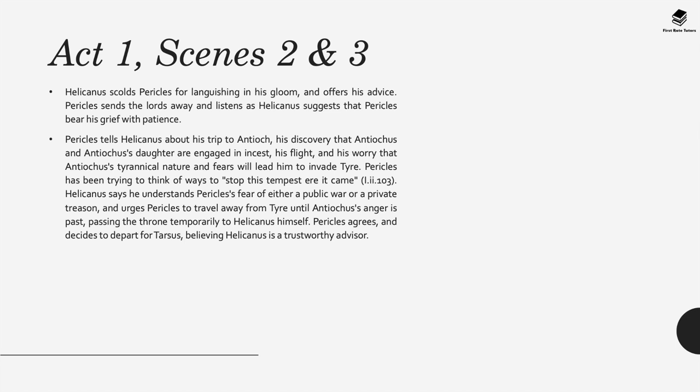Helicanus says he understands Pericles's fear of either a public war or a private treason, and urges Pericles to travel away from Tyre until Antiochus's anger passes, passing the throne temporarily to Helicanus. Pericles agrees and leaves. Meanwhile, Thaliart enters Tyre intending to kill Pericles, reasoning that if he doesn't commit the crime he will be hanged at home. Helicanus and Aeschines enter with some lords, and Thaliart overhears them talking about how the king has departed. Thaliart introduces himself, then determines to tell Antiochus that Pericles perished at sea.